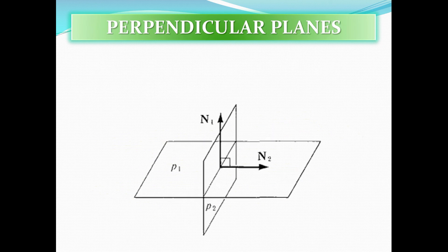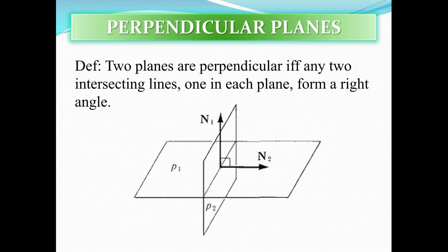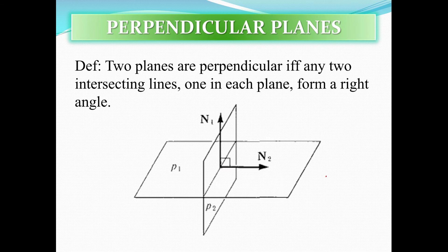For perpendicular planes: two planes are perpendicular if and only if two intersecting lines, one on each plane, form a right angle. These lines are called the normal, meaning they're perpendicular to each other and also perpendicular to the line of intersection. So these normals must be perpendicular to each other in order to meet the criteria for perpendicular planes.